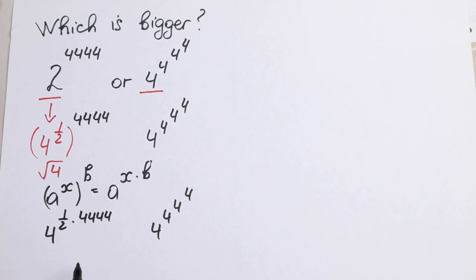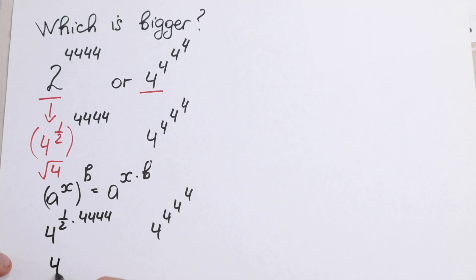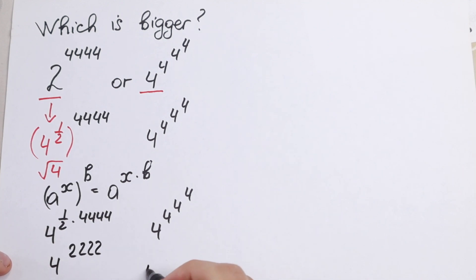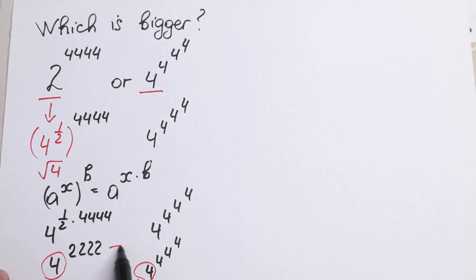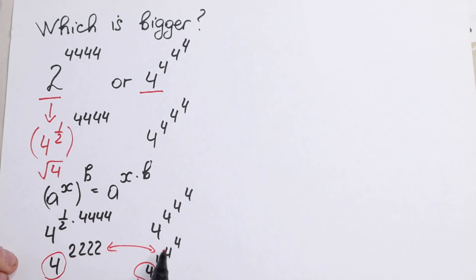We can easily compute this because it is half of 4,444, so this will be equal to 4 to the power 2,222. On the right side we have 4 to the power 4 to the power 4. As you can see, now we have the same base of 4 on both sides, so we just compare our powers and ignore the base.